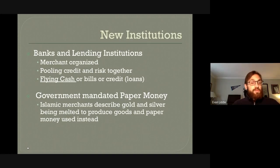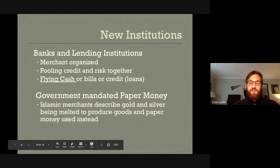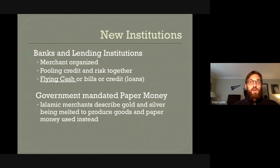Paper money also symbolized how much production was going on in Song Dynasty China. Merchants from other parts of the world described gold and silver being melted to produce goods and paper money being used instead — you would literally turn in your gold and silver and use paper money instead, and that gold and silver would be used to create something that would then be sold for paper money. That's how active the government and economy of Song Dynasty China was.